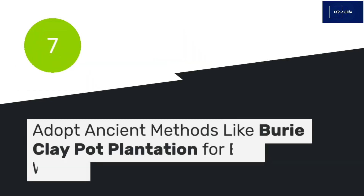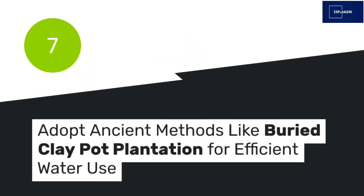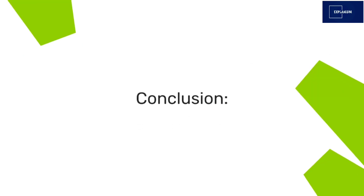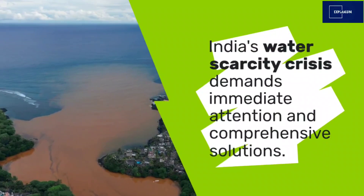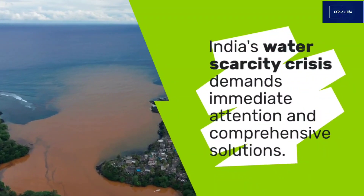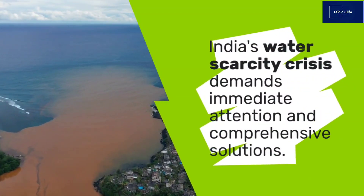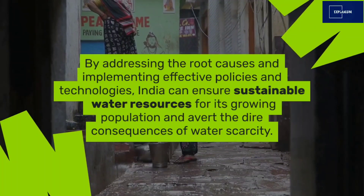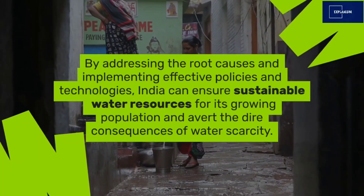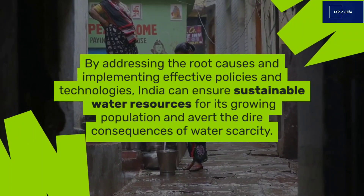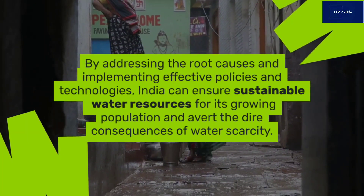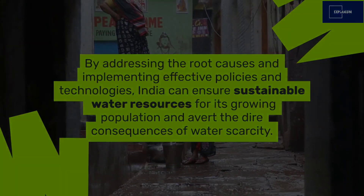7. Buried clay pot plantation technique — adopt ancient methods like buried clay pot irrigation for efficient water use. India's water scarcity crisis demands immediate attention and comprehensive solutions. By addressing the root causes and implementing effective policies and technologies, India can ensure sustainable water resources for its growing population and avert the dire consequences of water scarcity.